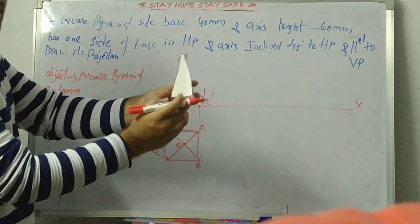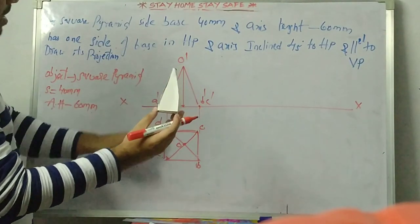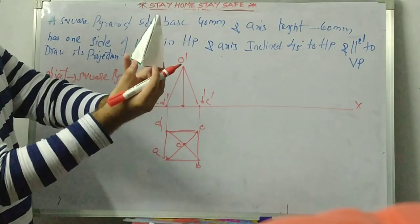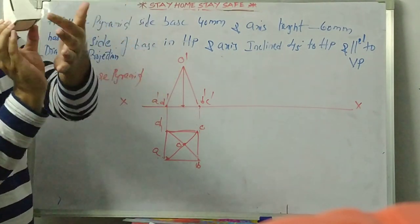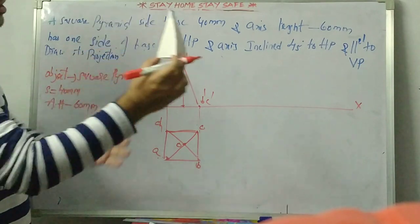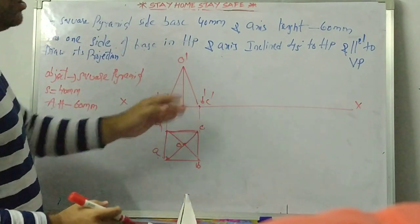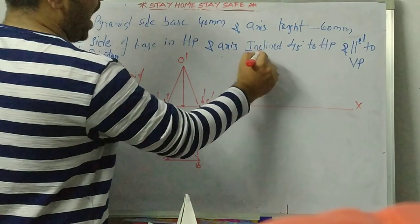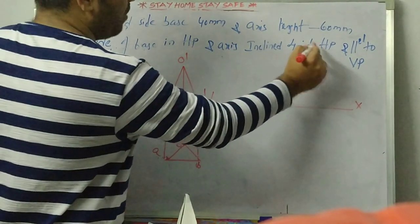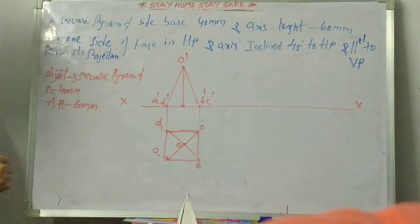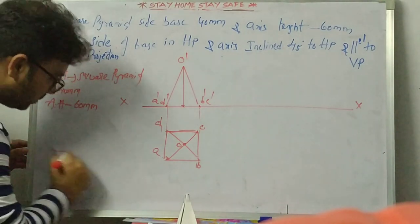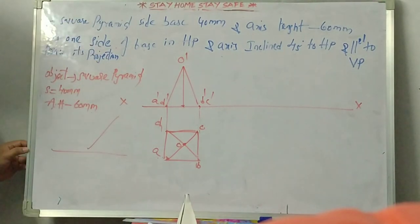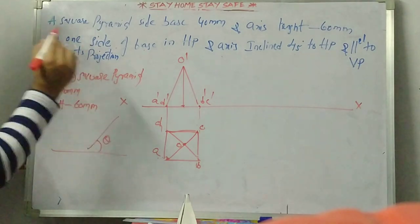In the front view I can see face AB. I cannot see D and C in the front view. The condition given is that the axis is inclined 45 degrees to the HP.